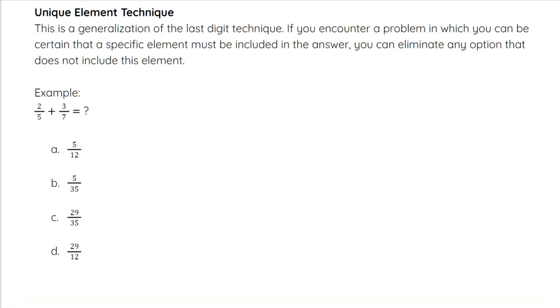Our next technique is the Unique Element Technique. This is a generalization of the last digit technique. If you encounter a problem in which you can be certain that a specific number or element must be included in your answer, then you can eliminate any other options that do not include that element or number. For example, when we add fractions, we have to have a common denominator.